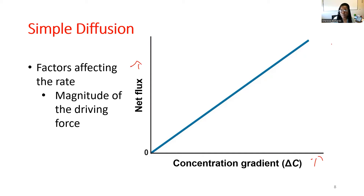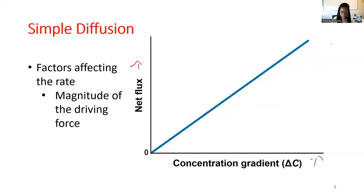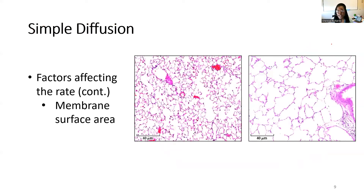As high as we can raise that concentration gradient, that's as fast as we're going to get particles moving. That is a directly proportional and continuous relationship — there's no limit to how fast we can move particles based upon how large we can make that concentration gradient.